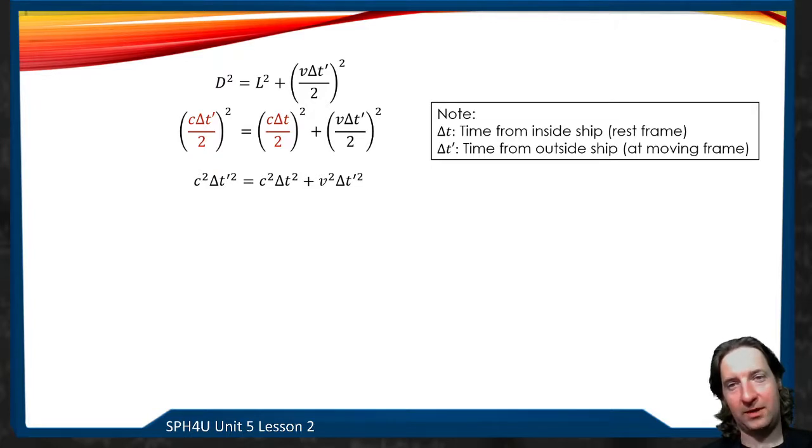So we can square everything. The fours all cancel. And I end up with C squared delta T prime squared is equal to C squared delta T squared plus V squared delta T prime squared. Bringing all the delta T primes over to the left-hand side, factoring out delta T prime, and then dividing both sides by C squared minus V squared.